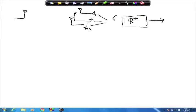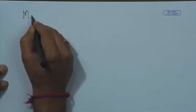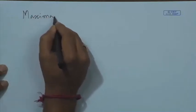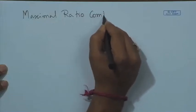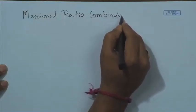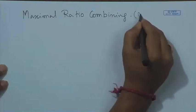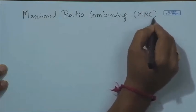Previously there was a switch going through in the selection combining. But now we do not have a switch — we have a weight, and after the weight there is some kind of addition. This is the different method of combining, and we term it maximal ratio combining, also referred to as MRC.